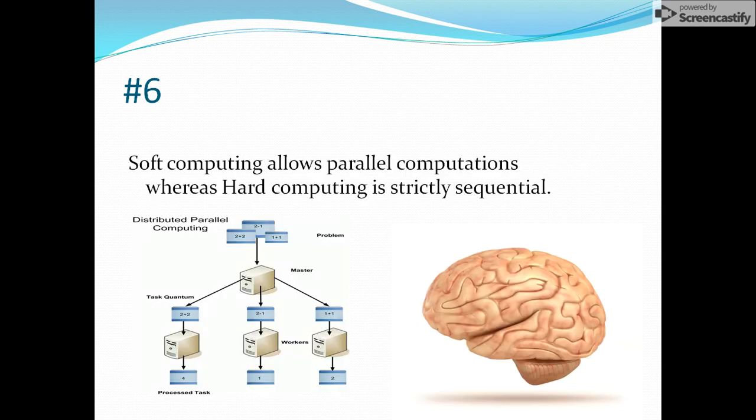Sixth difference - soft computing allows parallel computation. As our mind does. You know that at a time we can do different works through our mind. Our mind does have some parallel computation concepts. That is because we are able to see different things, we are able to listen, we are able to talk and so on. That is only because of the parallel computations of our mind. And same concept we can achieve with the help of soft computing.